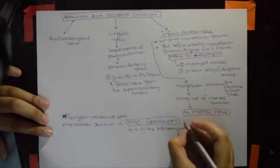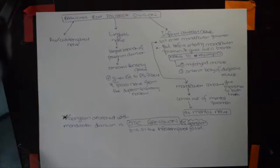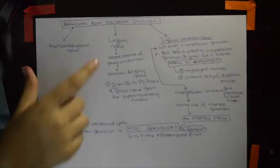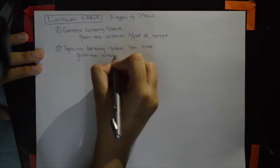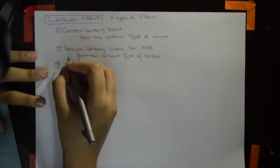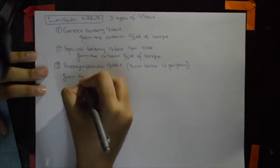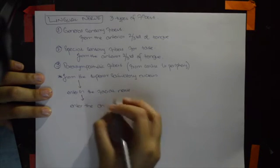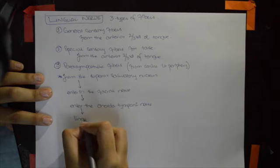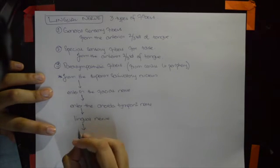The lingual nerve carries three types of fibers: first, general sensory fibers from the anterior two-thirds of the tongue; second, special sensory fibers for taste from the anterior two-thirds of the tongue; and third, parasympathetic fibers. The parasympathetic fibers originate from the superior salivatory nucleus, enter the facial nerve, then pass through the chorda tympani nerve, and then join the lingual nerve.